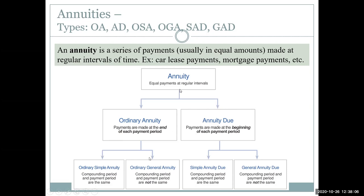Under each main category we have simple and general cases. The simple case is when the compounding period and payment period are the same — for example, a nominal rate of j2 = 4% with semi-annual payments. The j2 and semi-annual match, so that's a simple case. For an ordinary general annuity, the compounding and payment periods are not the same — for example, j2 = 4% but payments made monthly. Monthly and semi-annual don't match, so that's a general case. The same applies for simple and general annuity dues.